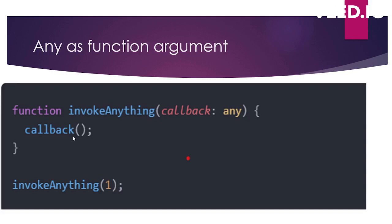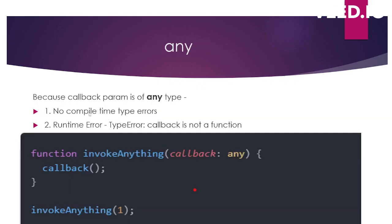However, in line two it will throw a runtime error because it is expecting callback to be a function, so it will say 'callback is not a function.' There are no compile-time type errors here, but there is a runtime error. This is a problem with any — we get errors at runtime and don't get proper type errors at compile time. This is a disadvantage or drawback of any.